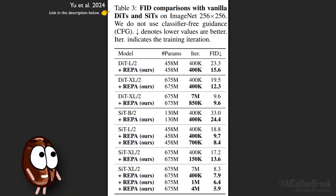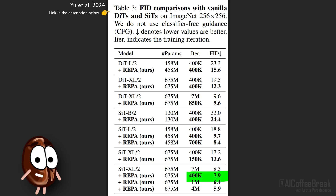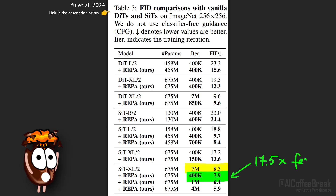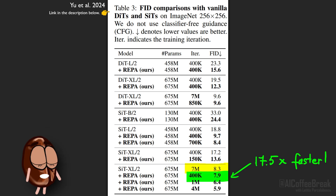The results on image generation are striking. For SiT, REPA reduced training time dramatically. The model now learns faster and better, reaching an FID of 7.9 after just 400,000 training steps. FID measures how similar generated images are to real images, where lower is better. Compare that to the vanilla SiT model which only managed an FID of 8.3 after 400,000 training steps — so with REPA, SiT reached a better FID score 17.5 times faster. For DiT, REPA brought the FID down from 19.5 to 12.3 after 400,000 training steps.